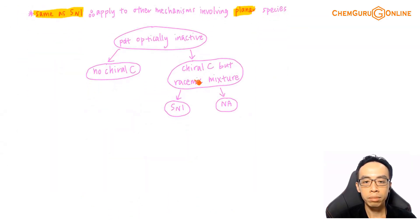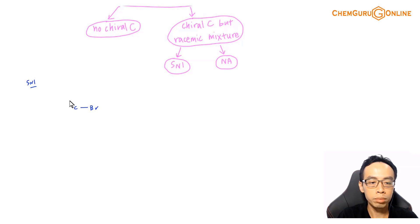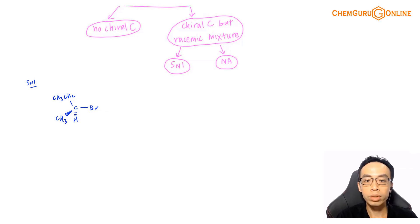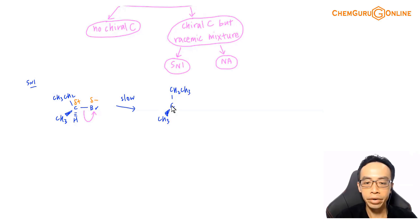Let us do a brief recap of SN1 mechanism. The example involves a carbon-bromine bond, with an ethyl group, a methyl group towards you, and hydrogen away from you. SN1 is a two-step reaction. In step one, we draw the arrow from the carbon-bromine bond to bromine — this is the slow step — forming a carbocation with the ethyl group on top, methyl towards you, and hydrogen away from you, giving us a C+ and Br-.